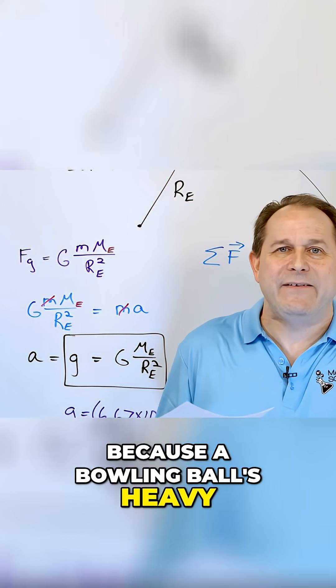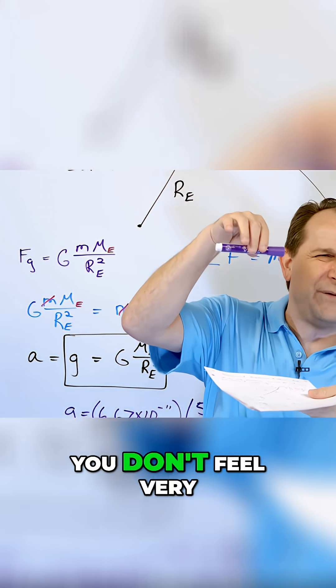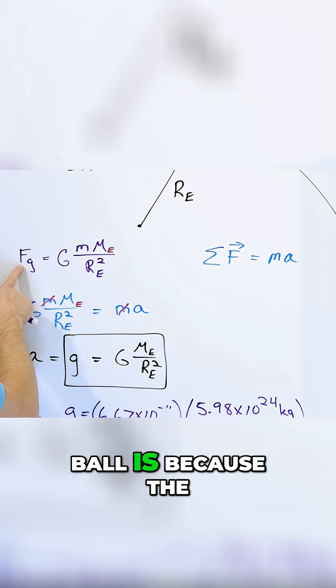Well, because a bowling ball is heavy. You feel the force of that bowling ball, but this marker, you don't feel very much force. Now the reason that we feel more force for a bowling ball is because